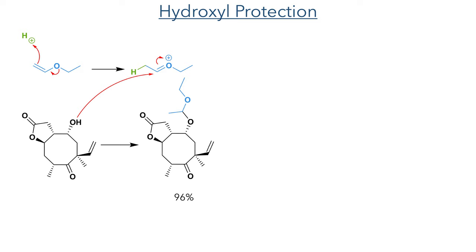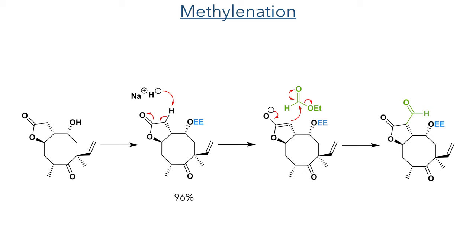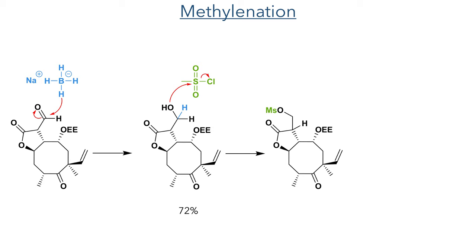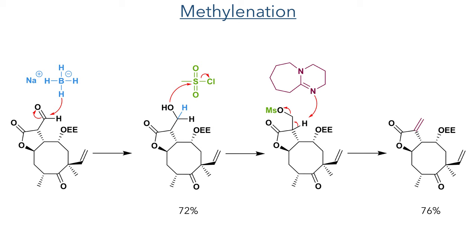The molecule was then reacted with sodium hydride, which deprotonates the lactone ring, generating an enolate which then adds to ethyl formate. This product was not isolated, and was instead directly reduced using sodium borohydride to produce the alcohol in a 72% yield over two steps. This was then reacted with mesyl chloride to form the mesylate, which served as an excellent leaving group to take part in an elimination reaction promoted by DBU. This deprotonates the molecule and eliminates the mesylate, forming the desired alpha-methylene group in a 76% yield.